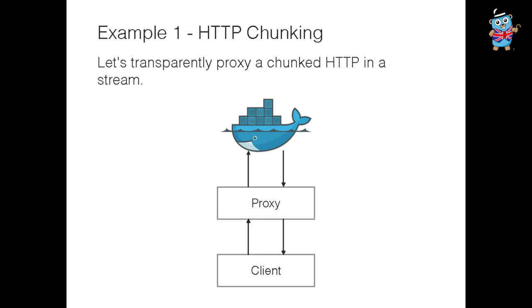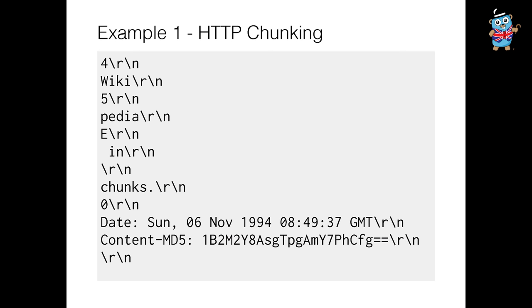Here's a diagram. At the bottom we have a client sending requests up to the proxy, and the proxy is forwarding requests up to our server, which responds with a chunked HTTP response. The body of the response is the interesting part. An HTTP chunked request looks like this: each chunk has a hex length, carriage return line feed, and then the actual data. The first chunk is four bytes long — 'wiki' — then a five-byte chunk, then a fourteen-byte chunk. The body ends with a zero-byte chunk, and that's how we know the body has ended.